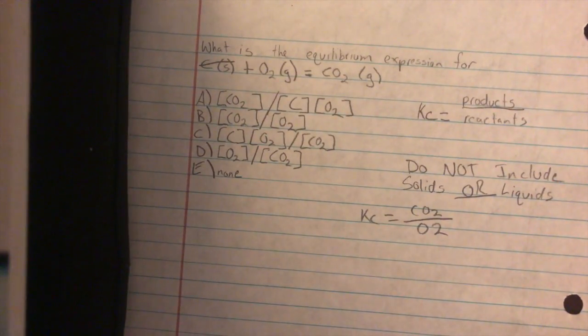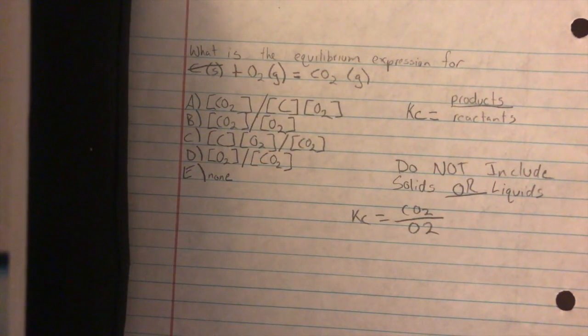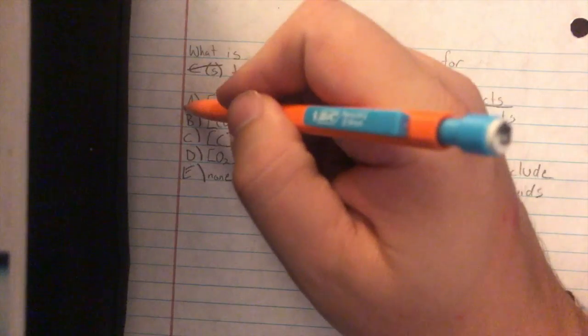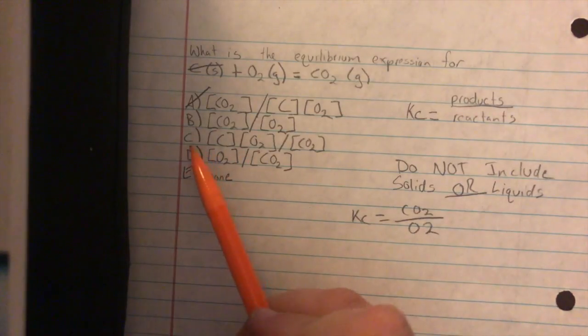Any of the choices that have carbon in it we can automatically cross out because we know carbon won't be included due to its matter state of solid. We can cross out A. We can cross out C.